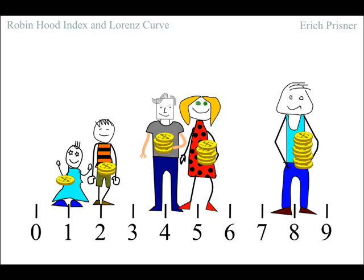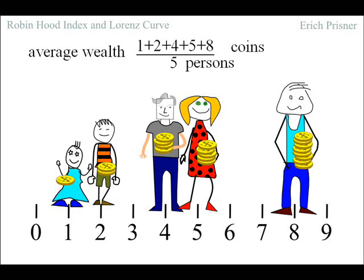This index is easy to calculate. First we need to calculate the mean or average wealth before Robin Hood enters. It is 1 plus 2 plus 4 plus 5 plus 8 divided by 5. The total wealth equals 20 divided by the number of persons. So the average wealth is 4 and this is how much each person will have after Robin Hood has done his work.